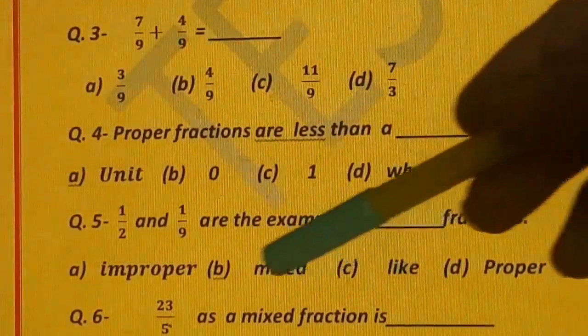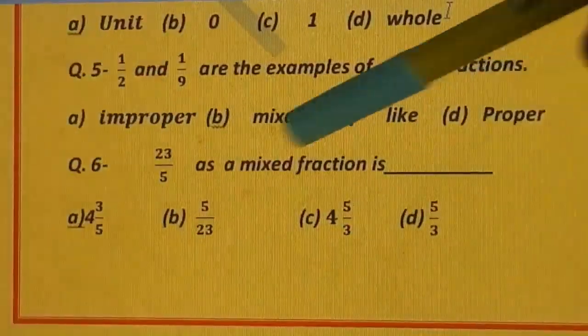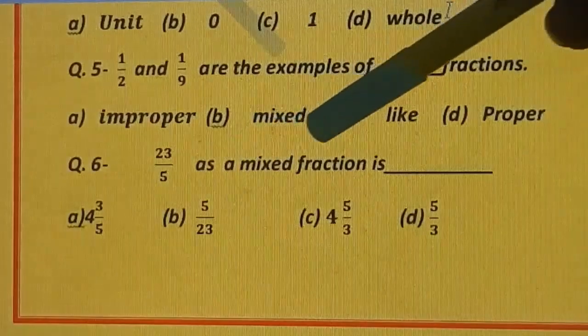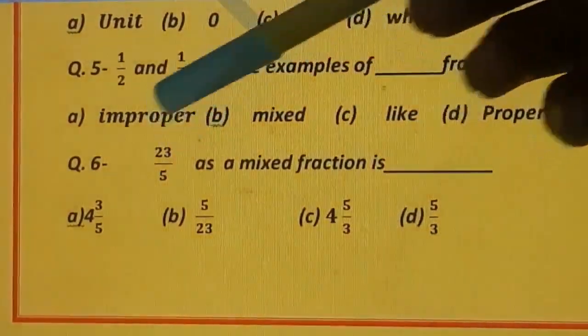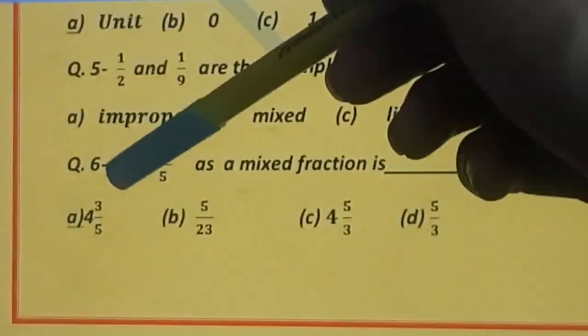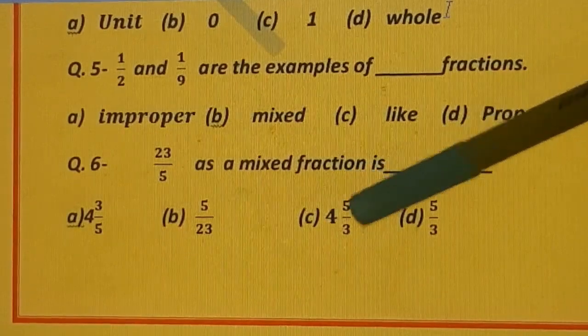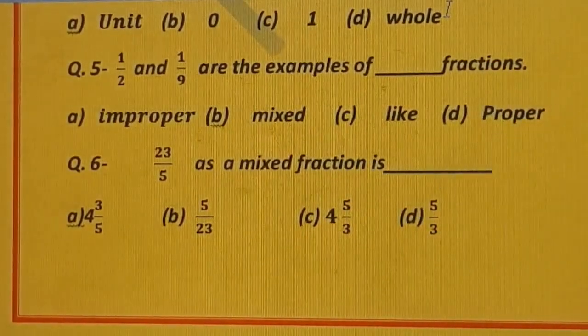Question number 6. 23 upon 5 as a mixed fraction is dash. You have to convert it into a mixed fraction. Options are: A) 4 whole 3 upon 5, B) 5 upon 23, C) 4 whole 5 upon 3, and D) 5 upon 3.